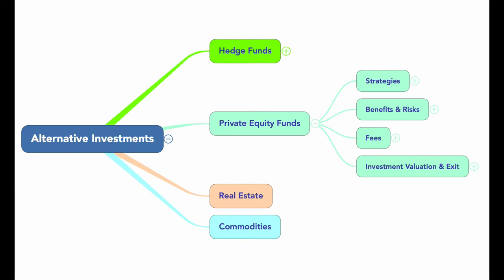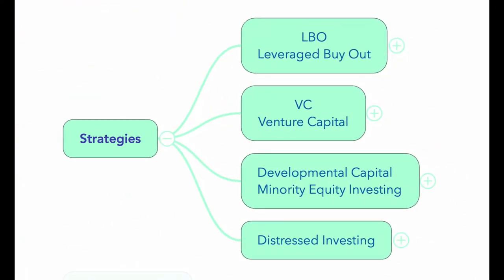The majority of private equity funds invest either in private companies or public companies that they intend to take private. This group is referred to as LBOs, or leveraged buyout funds. Some PEs also invest in early stage companies and these are called venture capital funds. There are also two additional but smaller categories: developmental capital funds and distressed investment funds.